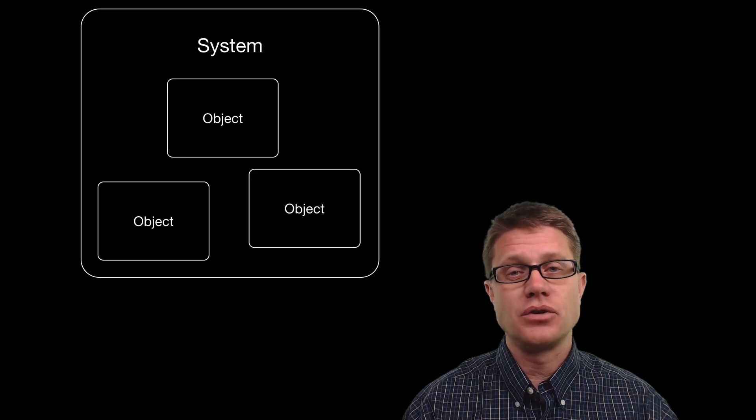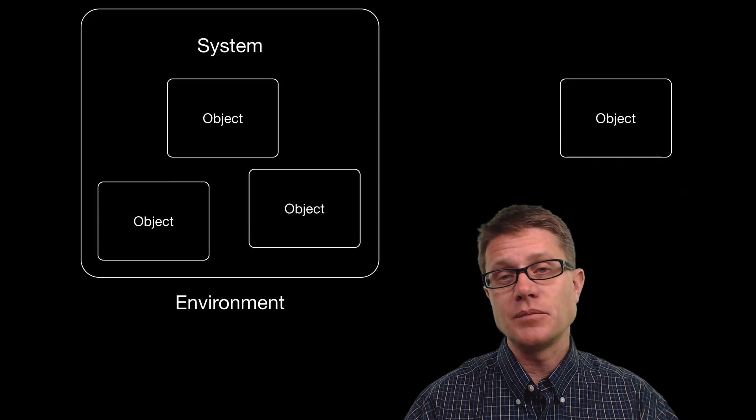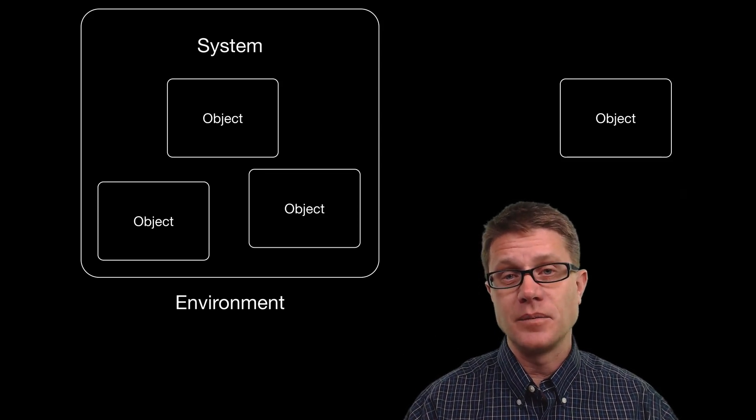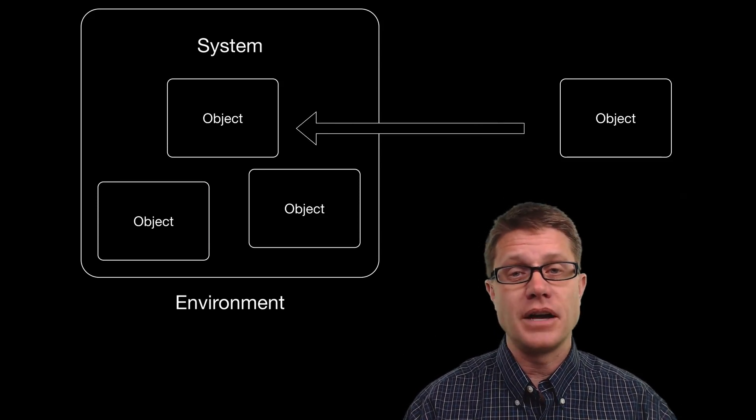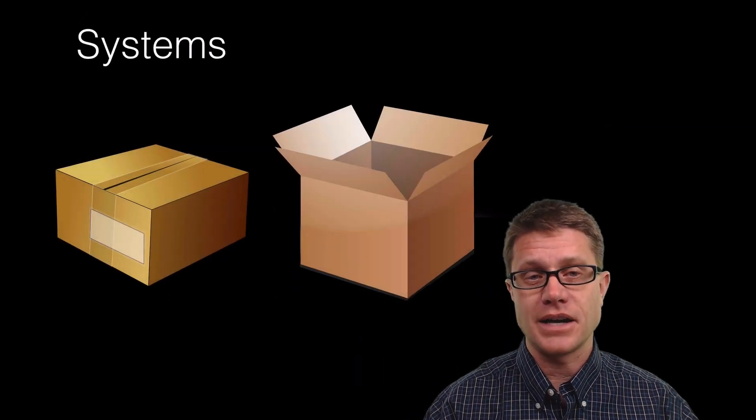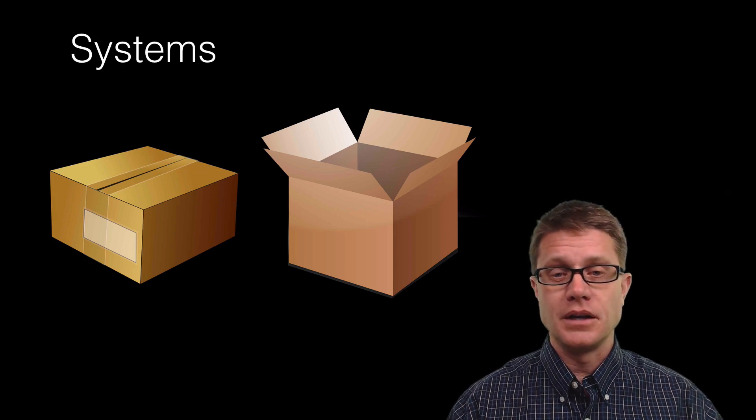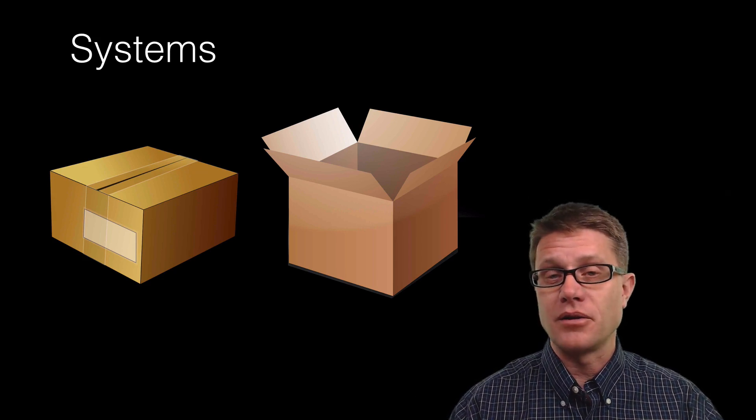And so a system is a series of two or more objects that are separated from their environment. But if we have an object outside of that system that is either applying matter or energy into or out of that system, we call that an interaction. And so systems can be closed or open. In an open system we can move matter in or out.